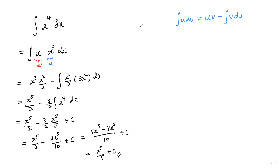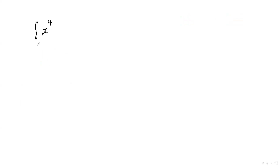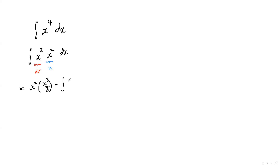Let's try another combination: x squared times x squared. Since these two are basically the same, it really doesn't matter which one you want to be dv. So I'm going to let this one be dv and this one will be u. This equals u times v: x squared times x cubed over three, minus integrate v du. So v is x cubed over three and du would be two x.